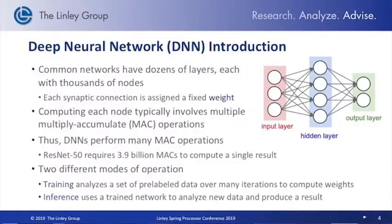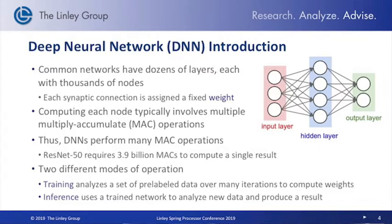For those not familiar with deep learning — deep neural networks — the networks used today have a lot of layers, typically dozens of layers, hundreds of layers in some cases, with thousands and thousands of nodes in each layer. Each connection has a certain weighting value, and those weights are used in a multiply-accumulate (MAC) operation to calculate the output of each node. A typical neural network like ResNet-50 requires 3.9 billion MAC operations, so you need a lot of computation to make these things work.